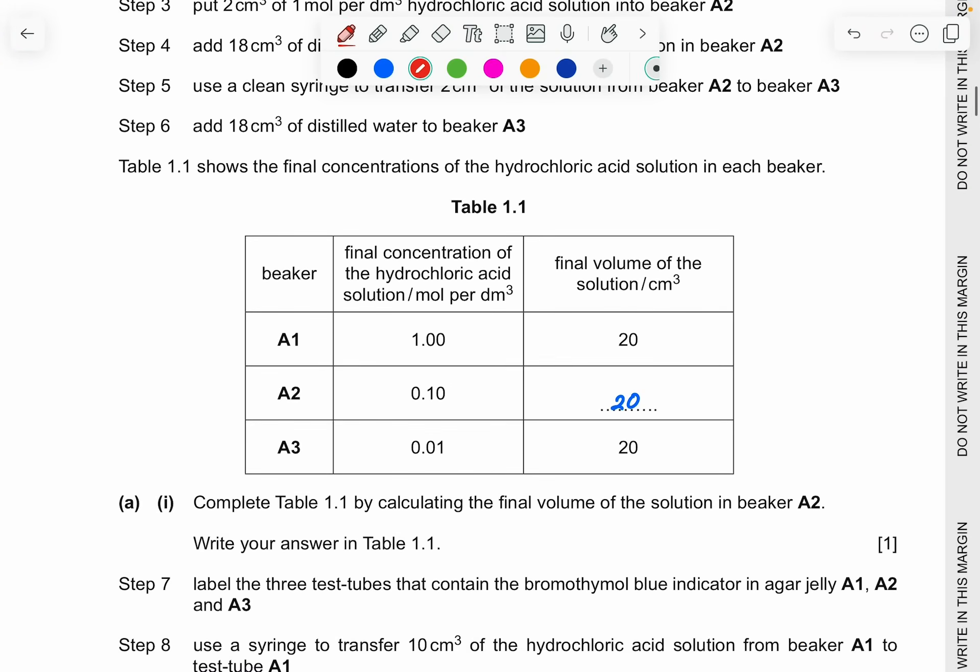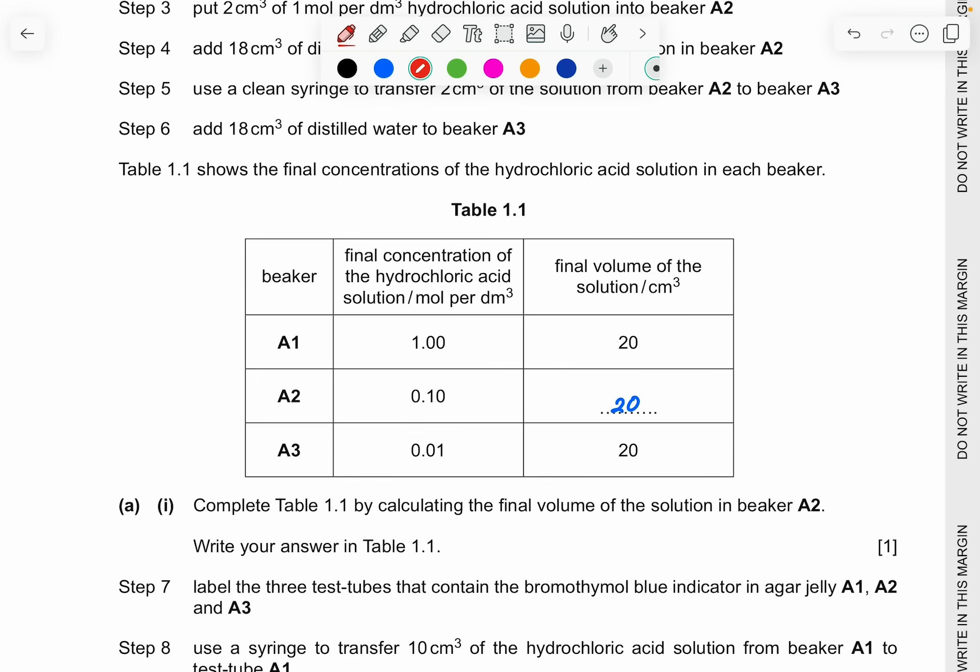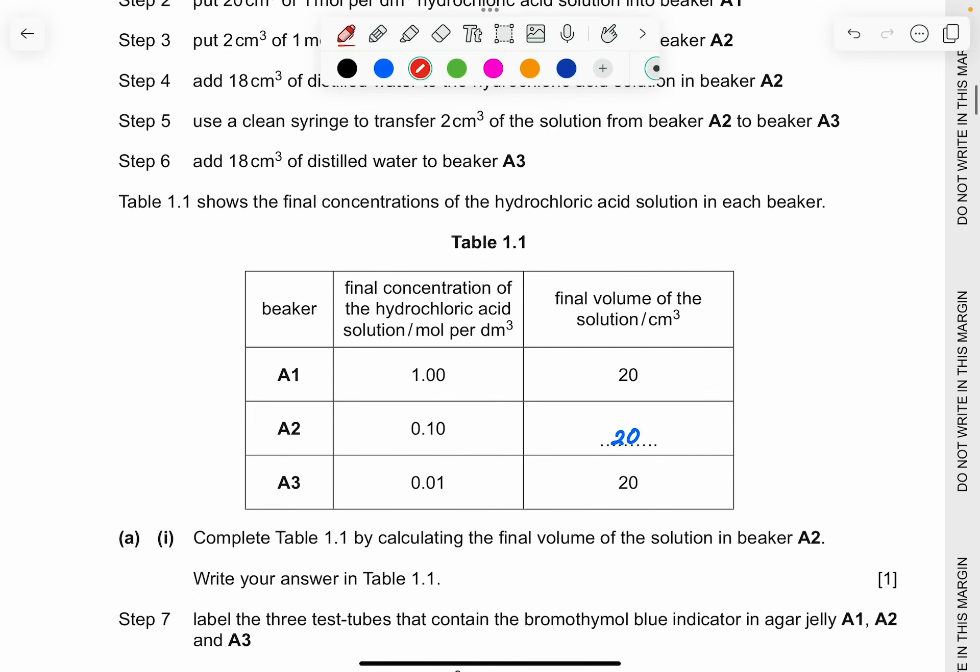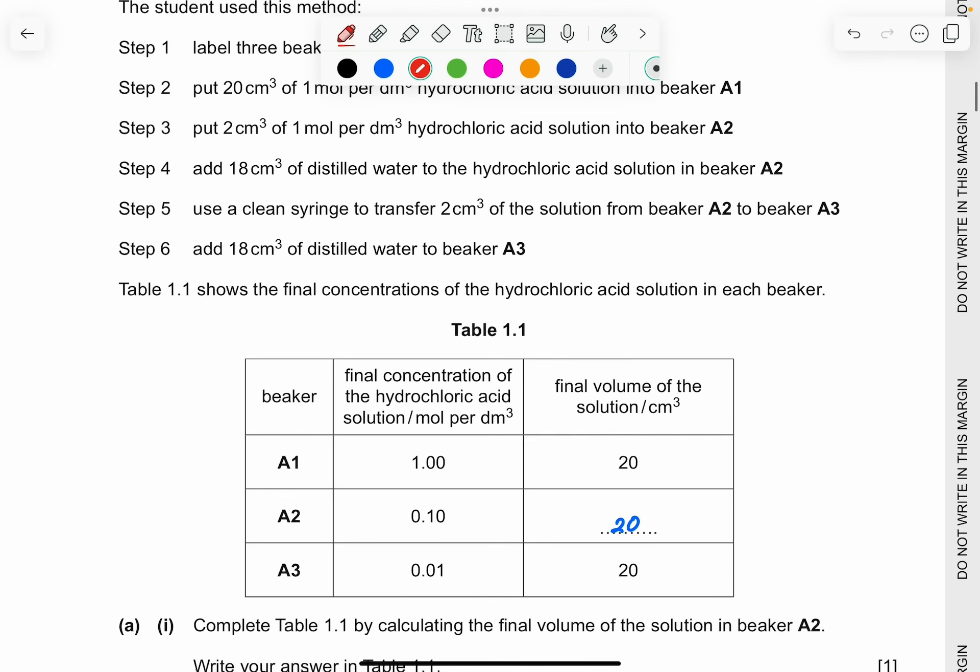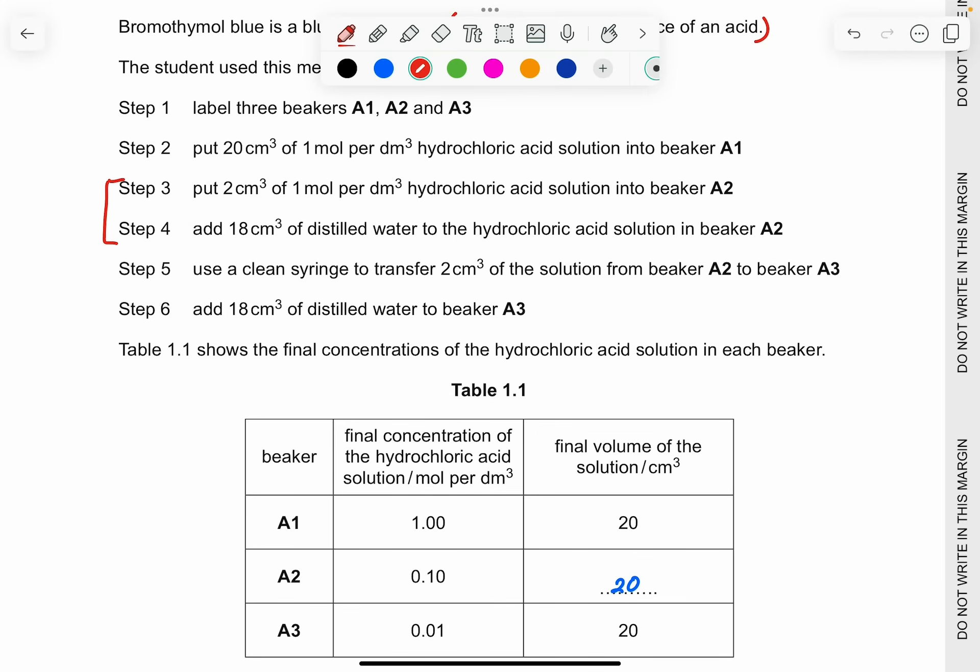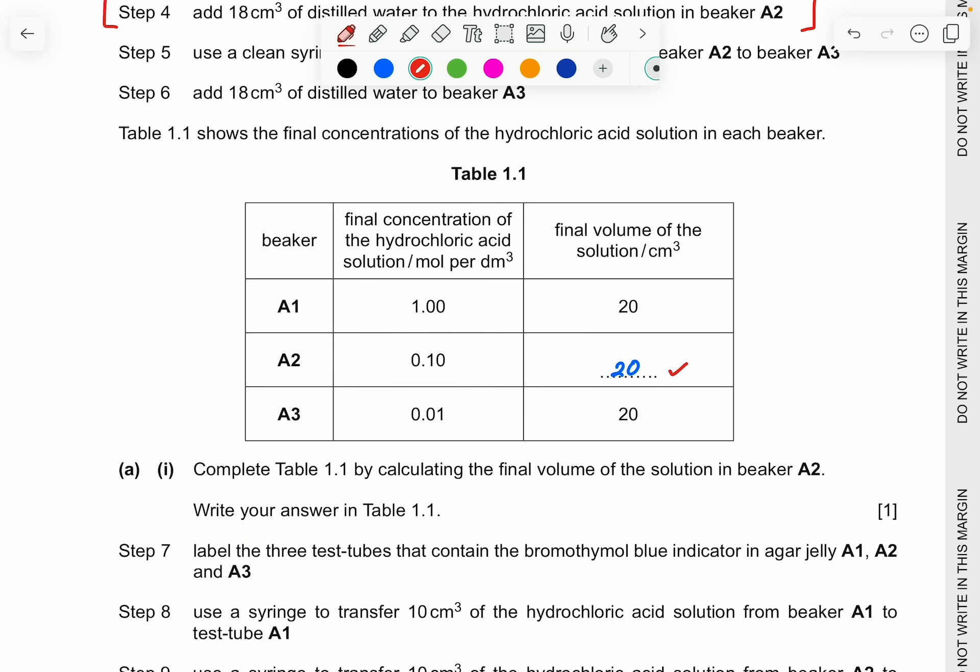So you can have a read of the steps here. Take some time to digest. And now they have asked you to complete table 1.1 by calculating the final volume of the solution in beaker A2. Write your answer in table 1.1. So for this question, the answer is 20. Why is it 20? Look at here. We look at step 3 and step 4. They have put 2 cm³ into A2, meaning here I have 2 cm³ of HCl. And I add 18 cm³ of distilled water. So this is 2, this is 18. You total up, you're going to get 20.